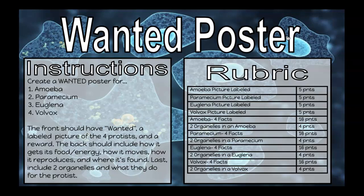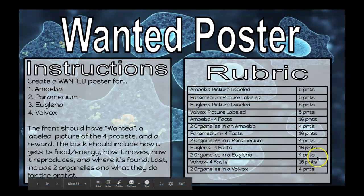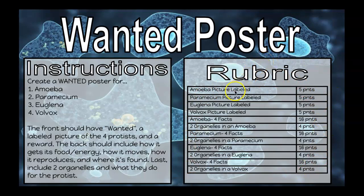The back of your poster is going to have all the pertinent information about your four different protists. You're going to tell me how it gets its food or energy, how it moves around, how it reproduces, and where it's found. Then you're going to pick any two organelles within the protist, list them, and tell me what each one does for the protist — what's its role.